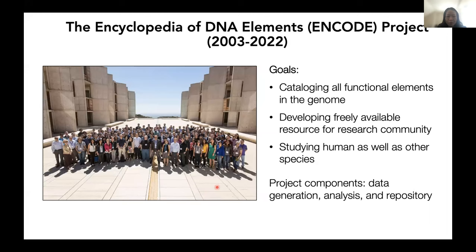Here is a photo of the consortium during phase three. The consortium has three goals: cataloging all functional elements in the genome including regulatory and transcribed elements; developing freely available resources for the research community for human and mouse; and performing data generation, data analysis, and maintaining a data repository. I have been leading the effort of consortium-wide data analysis, and today I'm going to give you a glimpse of the resources we've prepared and how to use them.